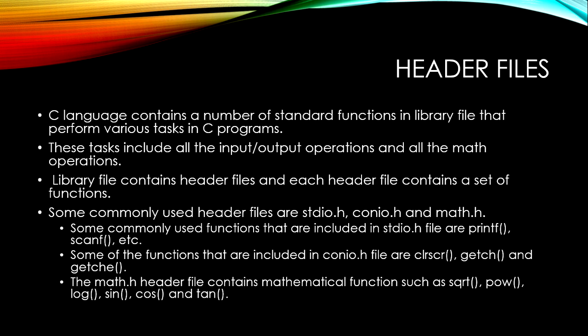When the source program is translated into an executable file, a copy of the function code is pasted into the source program by the linker from the header file before creating the executable file. That's all for today. In the next lecture we will discuss the structure of a C program.